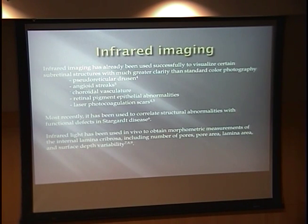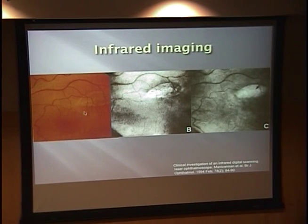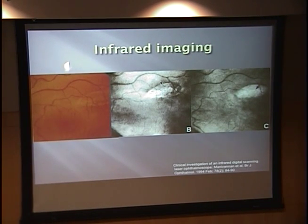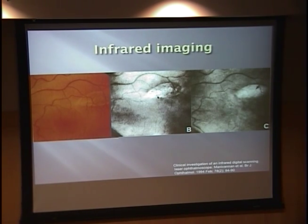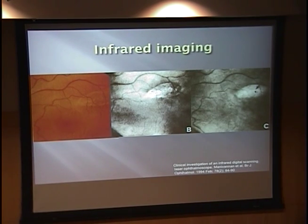There's a plethora of images out there — I chose one to demonstrate what IR imaging looks like. Here we have a color photo, and this is IR. You can set it to different wavelengths. At 670 nanometers, you can see a pigment epithelial abnormality with much greater clarity on IR imaging. At a different wavelength of 830 nanometers, you can actually see the choroidal vasculature.